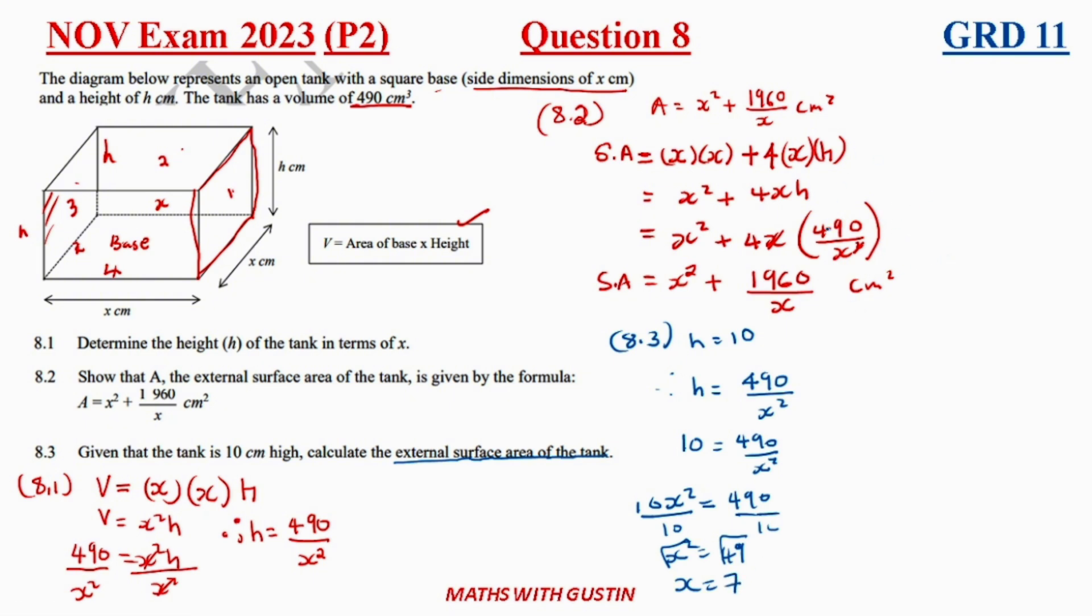So now if x is equal to 7 you can come and put x here onto our surface area which was given by x squared plus 1960 over x from the previous question. So therefore 7 squared plus 1960 all over 7. We punch this into our calculator. Let's see what we're gonna get here. I'm getting 329. You guys let me know what you got on the comment section below. If you got the same answer then give this video a thumbs up. If you got a different answer let me know on the comment section below.